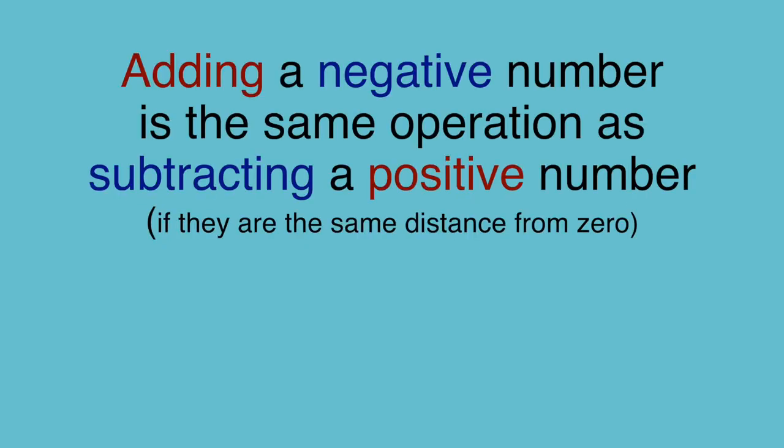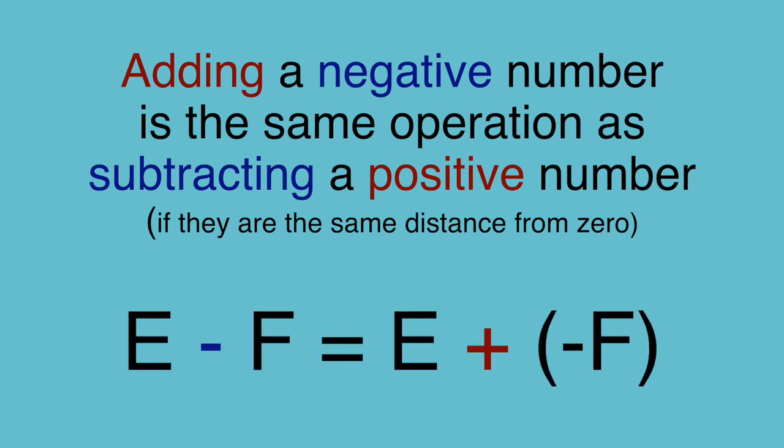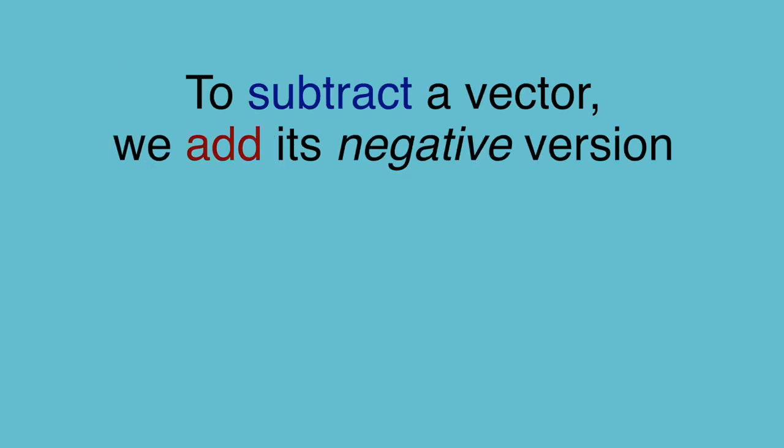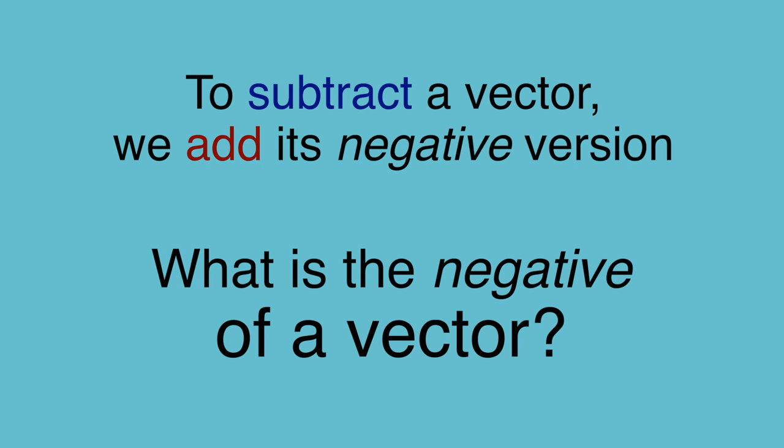That's because adding a negative number is the same as subtracting a positive number, assuming they are the same distance from zero. While this may seem arbitrary, it's actually the exact formula we need to subtract two vectors correctly. What we need to do is add the negative of f dash to e dash. The final question is, what is the negative of a vector?